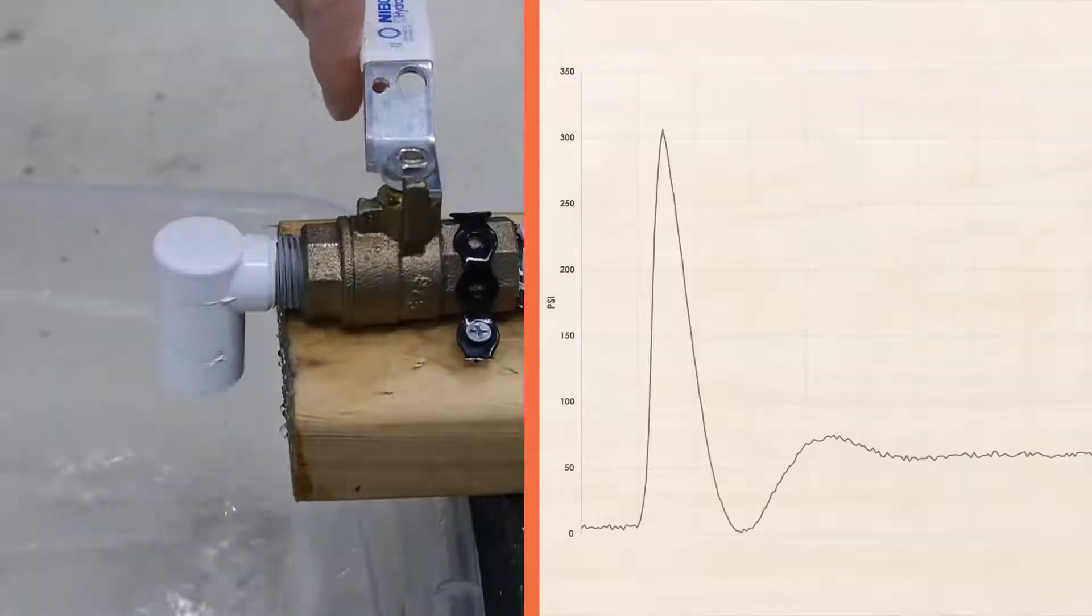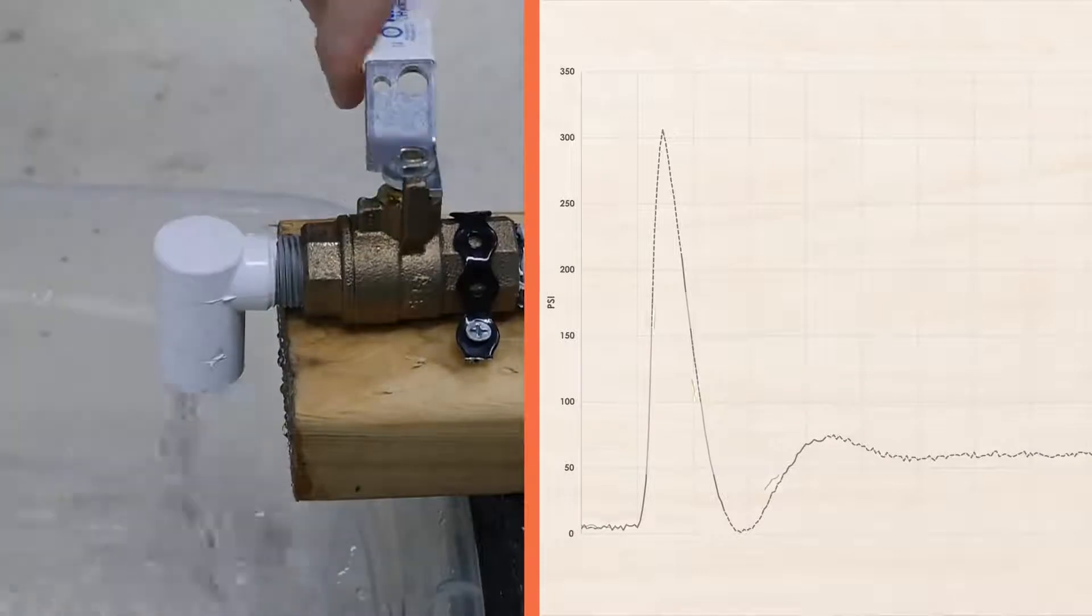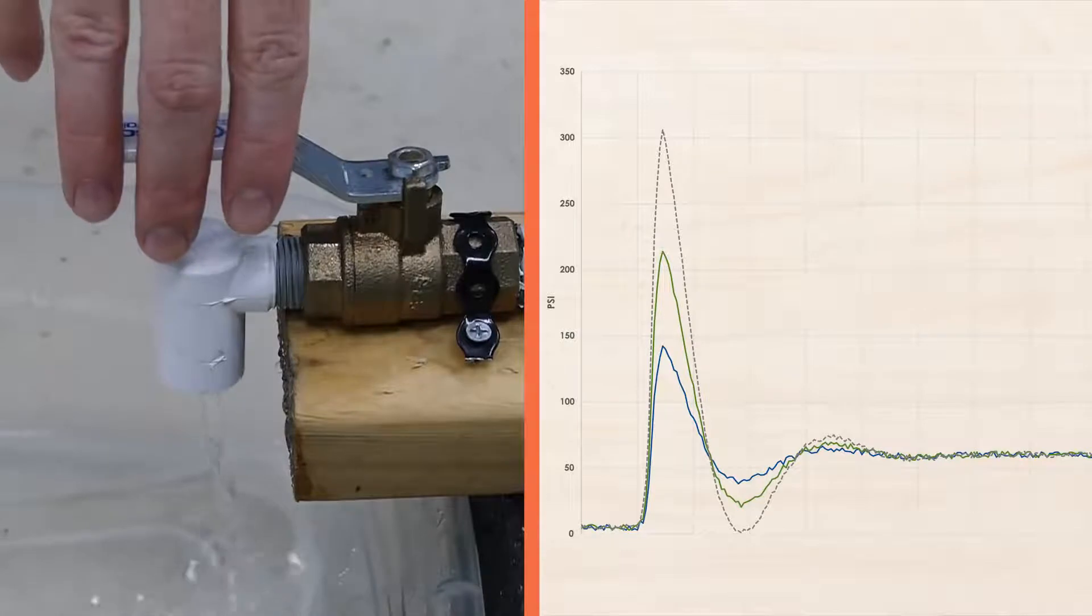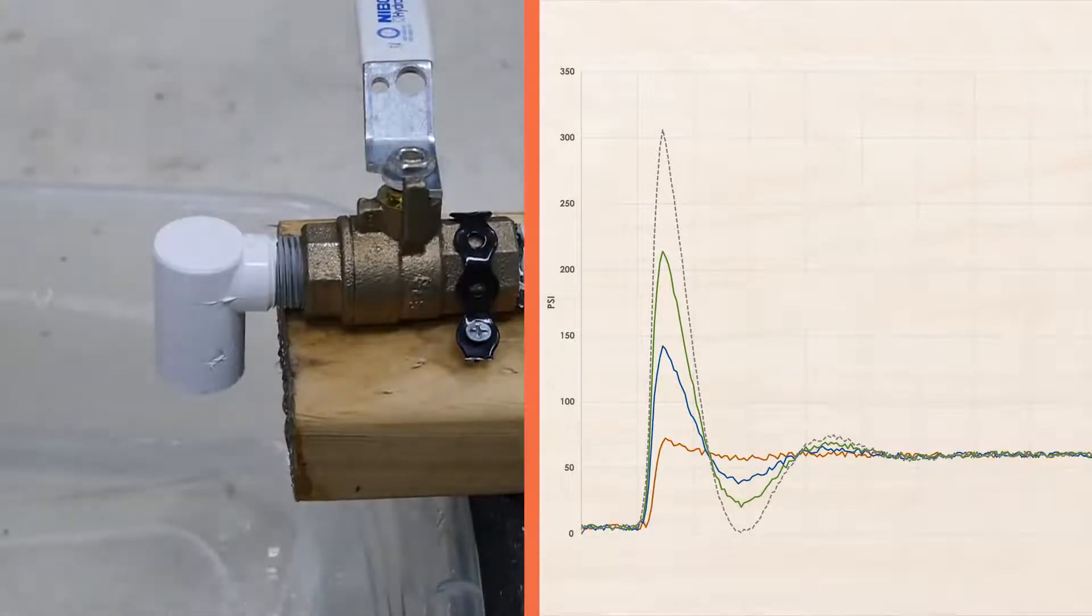In this case, my pipe size is fixed, but I can reduce the flow rate to limit the velocity. Each time I reduce the velocity and close the valve, the resulting spike in pressure decreases.